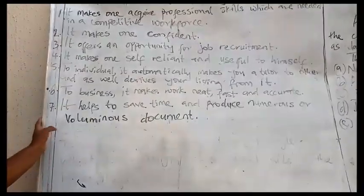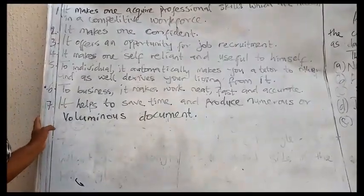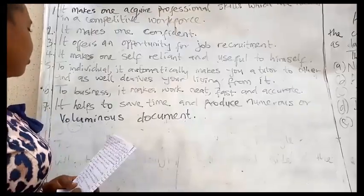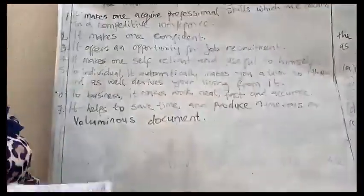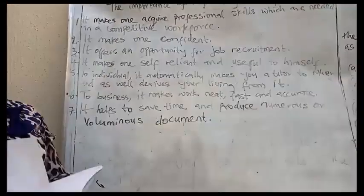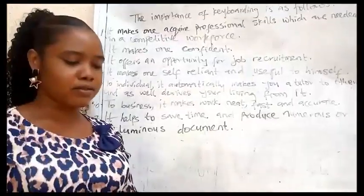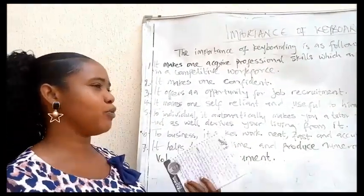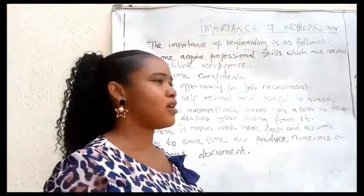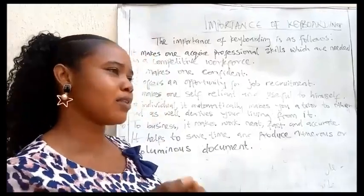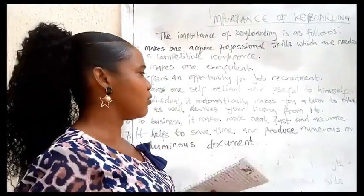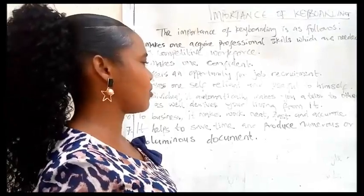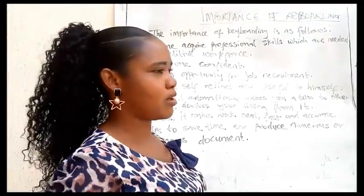Number seven, it helps to save time and produce numerous or voluminous documents. We know that if you're fast in typing, typing five pages won't be up to 13 minutes. But when copying with your hand, using pen and paper, it will take much more time.